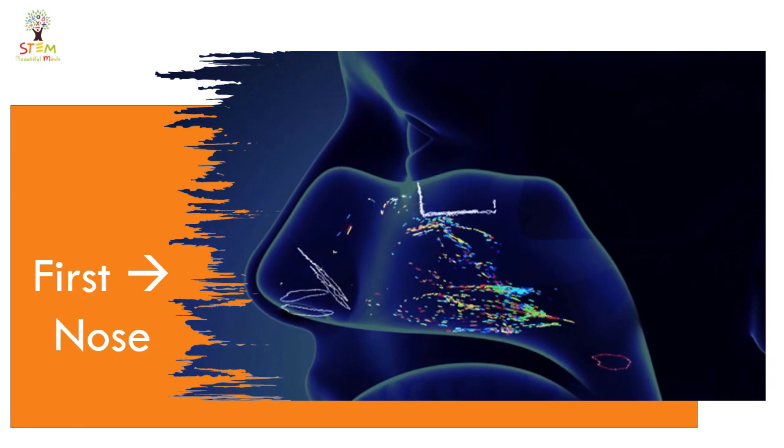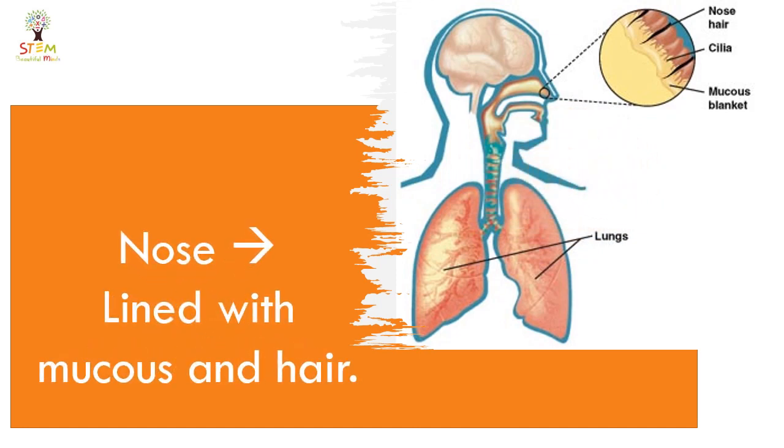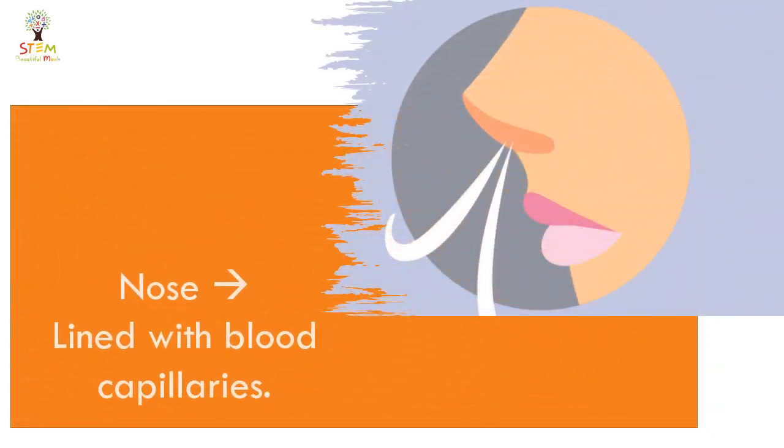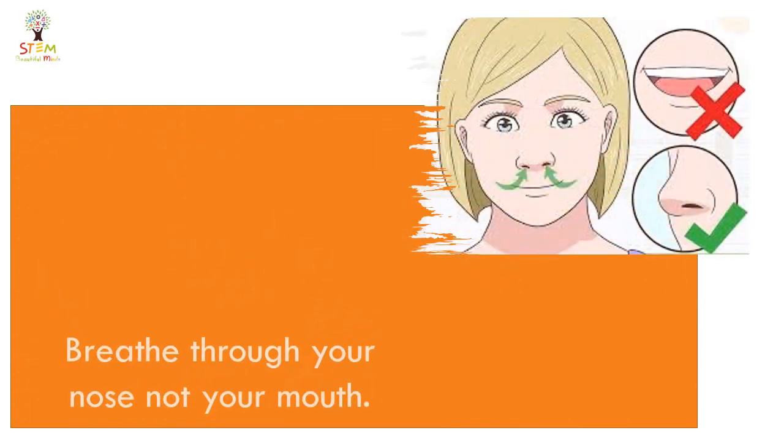The nose is lined with a mucous layer and hair to filter the air from dust and microbes before entering the two lungs. It's also lined with blood capillaries, tiny blood vessels, to warm the air before entering the lungs. That's why we should breathe through the nose, not through the mouth.